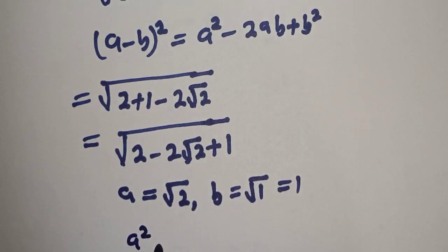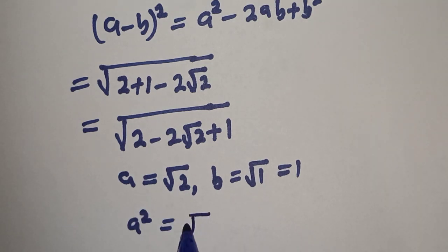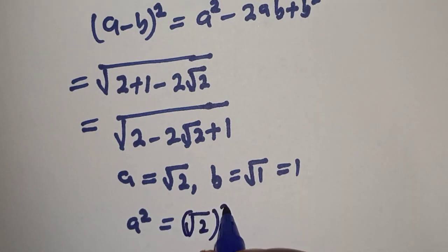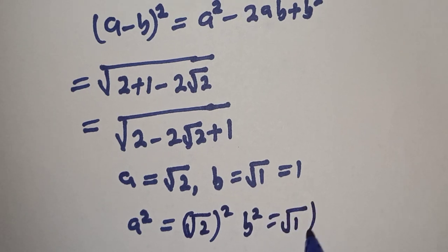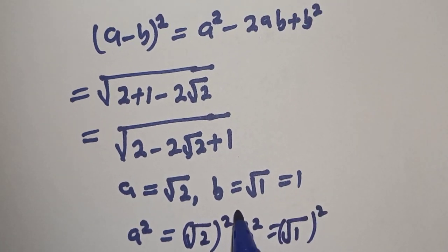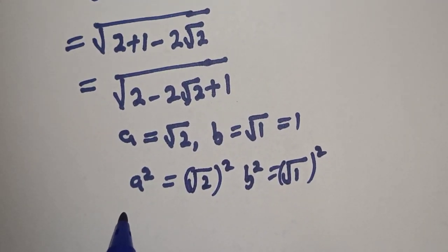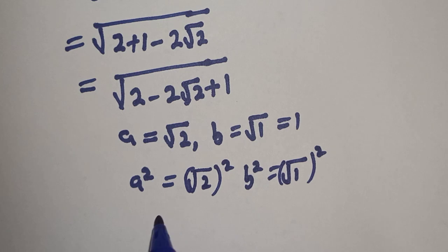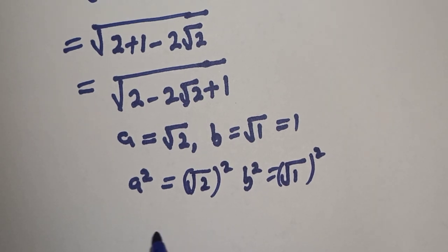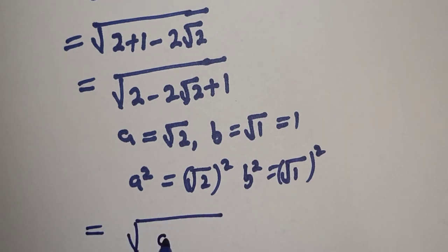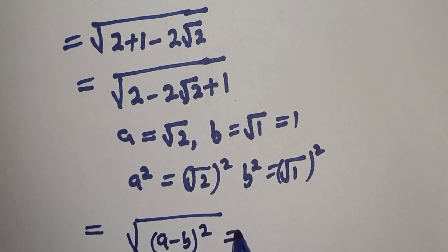And then a square is equal to root 2 square, and b square is equal to root 1 square. So if you compare this, here we have this is equal to square root of a minus b square is equal to